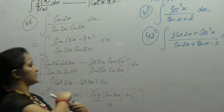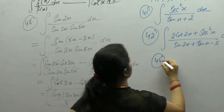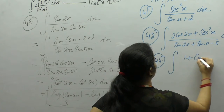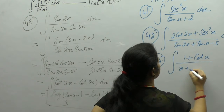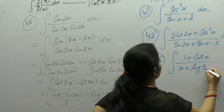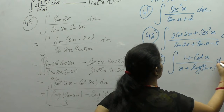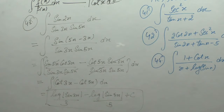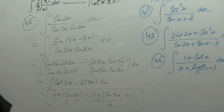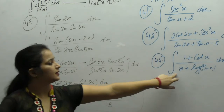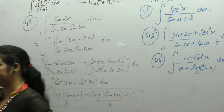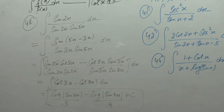Next is integration of (1 + cot x) upon (x + log of sin x) dx. Here also we can substitute the denominator as t, and we will get the derivative of that term in the numerator. We can directly apply the formula integral of type f'(x)/f(x) = log|f(x)|.